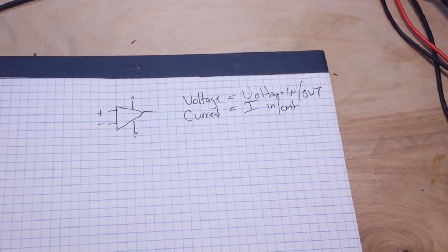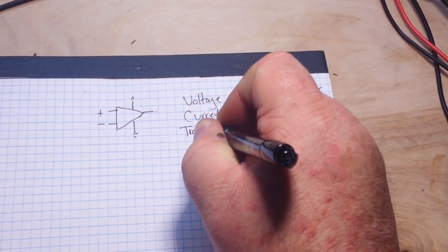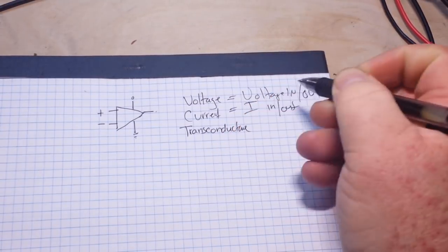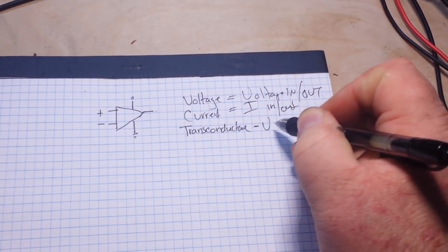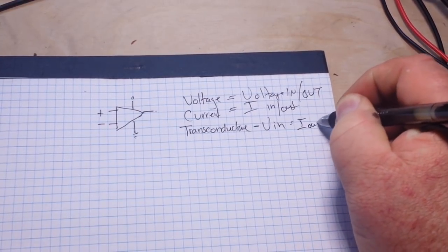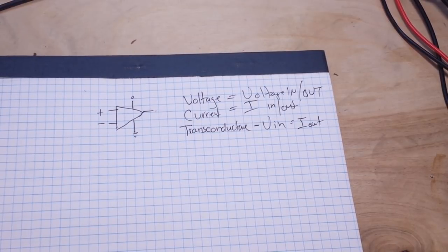And then we have a couple things we've never talked about on this channel before. Let's start with transconductance, and that is voltage in and current out.